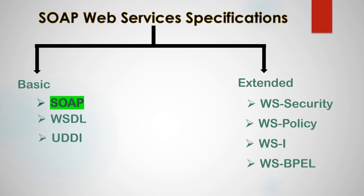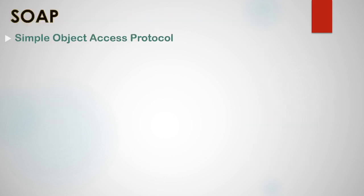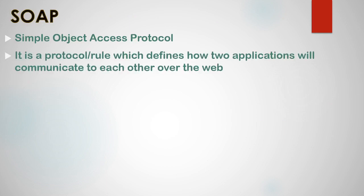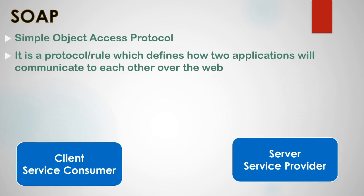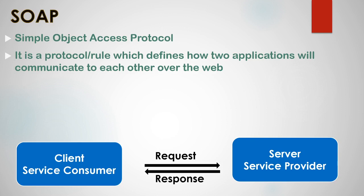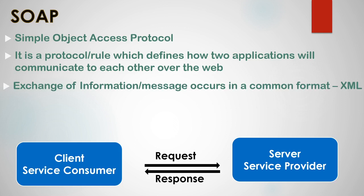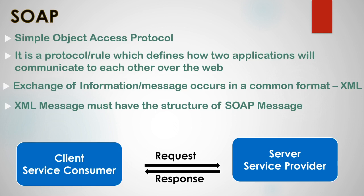Let's get started by understanding the SOAP specification. SOAP stands for Simple Object Access Protocol and it is a protocol or rule which defines how two applications will communicate with each other over the web. There is a client machine which is a service consumer and a server machine which is a service provider, and they want to communicate as a request and response pair. SOAP states that exchange of information occurs in a common format between this client and server machine, and that common format is XML.